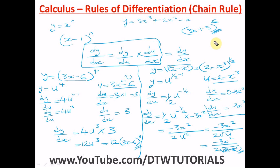Our next rule is the product rule, which is a combination of the chain rule and the direct rule. After that comes the quotient rule, which also applies the product rule, chain rule, and direct rule. So watch these videos sequentially: direct rule, chain rule, product rule, then quotient rule.